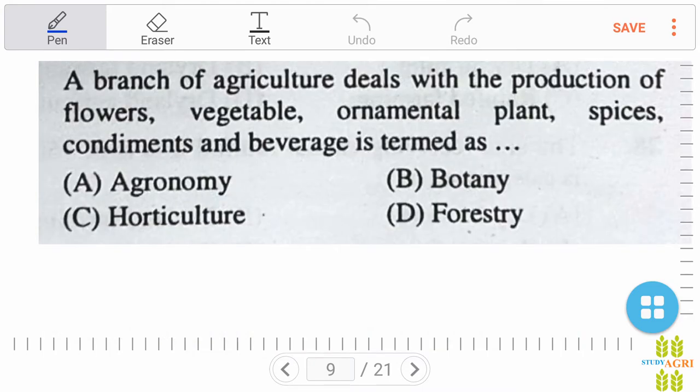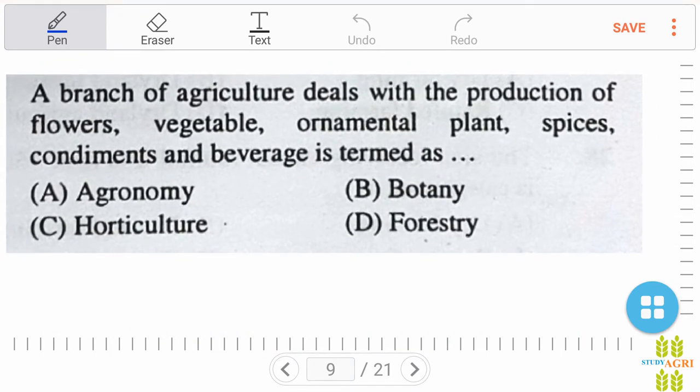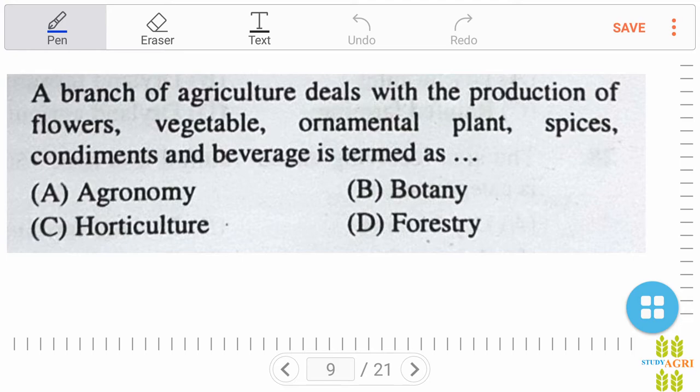A branch of agriculture dealing with production of flowers, vegetables, ornamental plant species, condiments, and beverages is termed as? Our right answer is horticulture. If it is related to soil, then answer must be agronomy, but in this question our right answer is option C, horticulture.